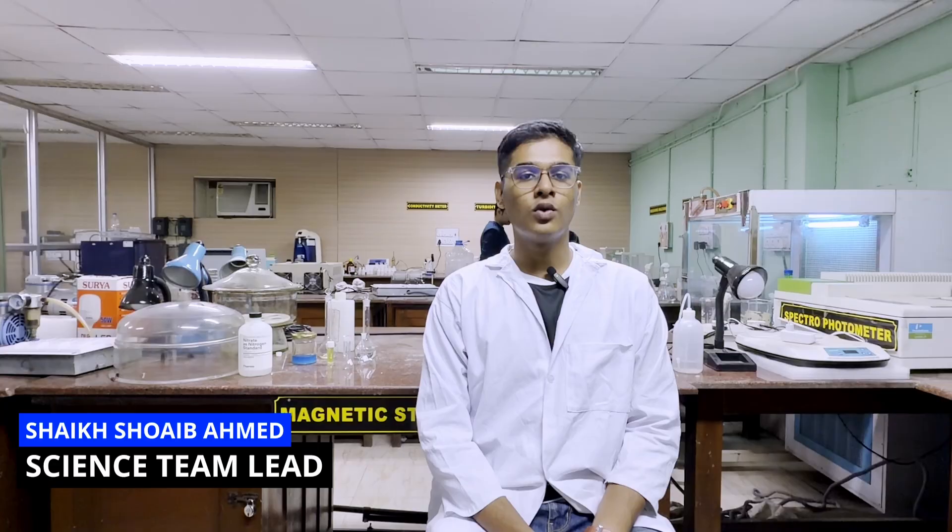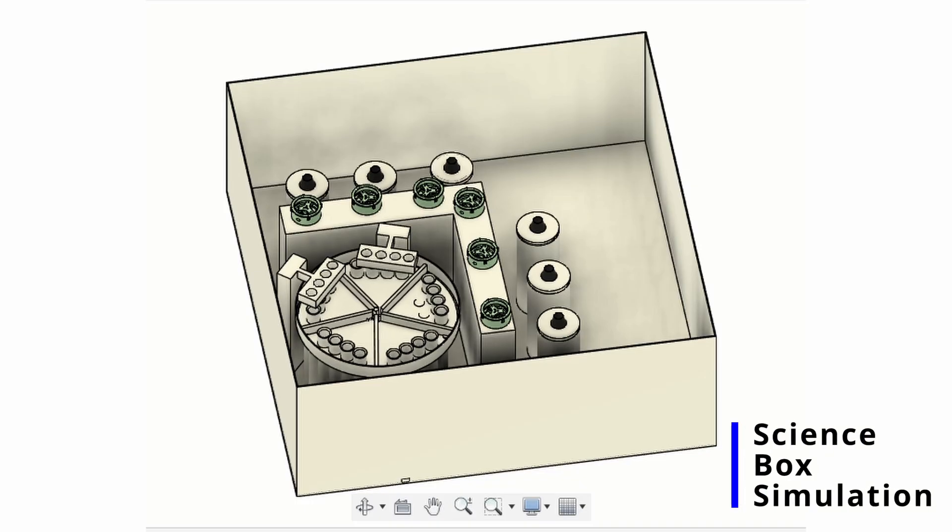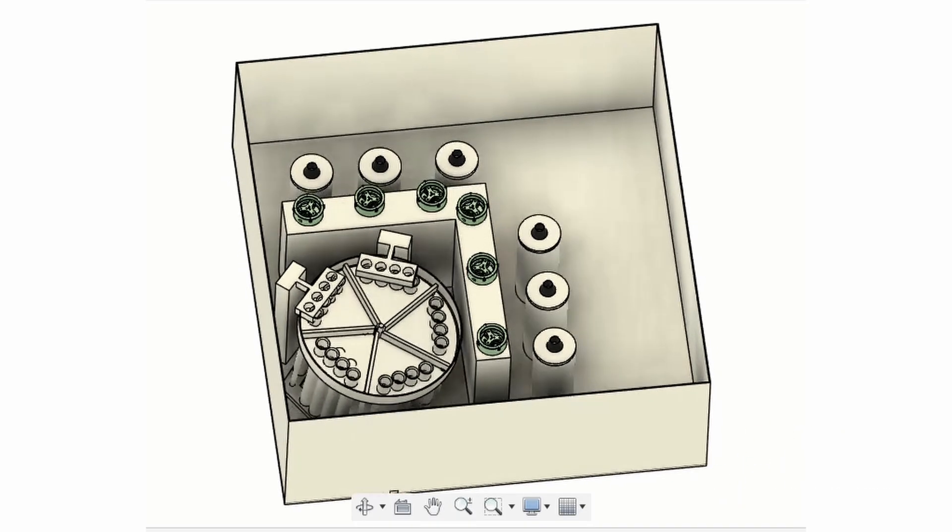Now moving to the science part of the rover, we are using a minimalist design with robust efficiency. Our rover consists of specialized instruments and chemicals to detect the presence of extinct and extant life. Our science box is divided into 5 sections for 5 different sites, each containing 4 test tubes.